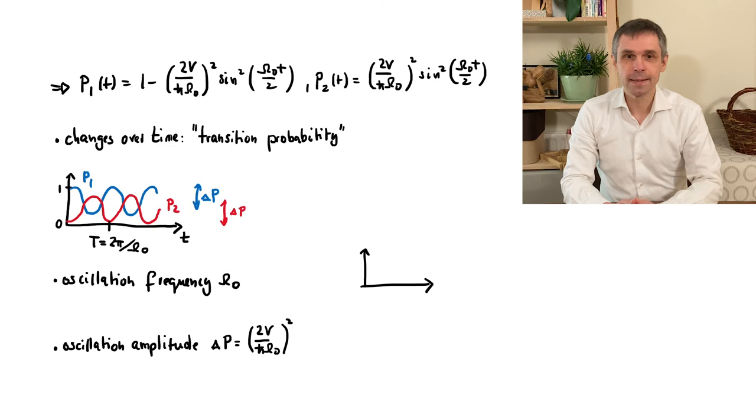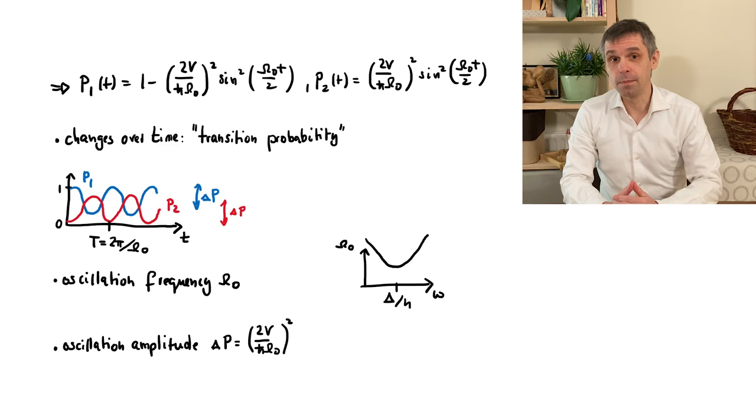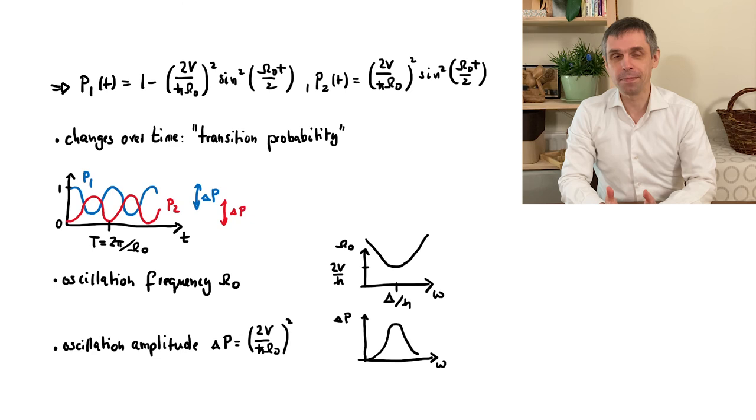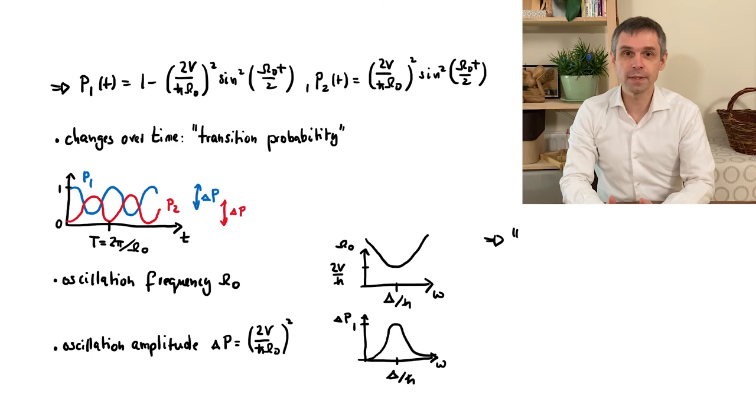For this, let us keep v and delta fixed and vary the driving frequency little omega. The Rabi frequency then displays a minimum when the driving frequency equals the energy spacing delta of the levels divided by h-bar. And at exactly this frequency, the oscillation amplitude becomes maximal. Indeed, it becomes 1. So after half of the period, the probability to be in the second state then becomes 1 as well. Situations where a system displays a very pronounced reaction on some external driving are called resonances. And here we thus see that such a resonance occurs exactly when h-bar times little omega equals the energy spacing capital delta.